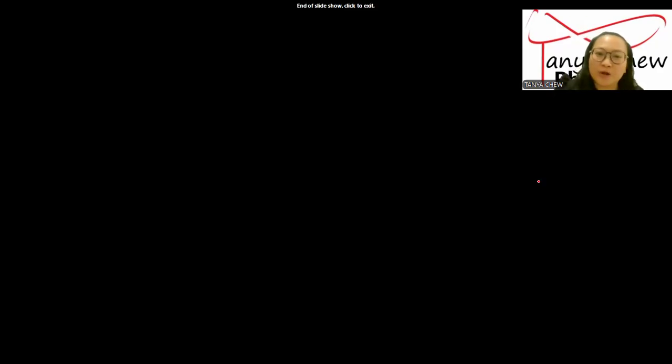Now a quick recap. Mass is how much stuff you are made of. It never changes. Weight is the force, gravitational force, pulling on the mass. So mass is measured in kilograms, weight must be measured in newtons. Use W equals mg in every calculation.